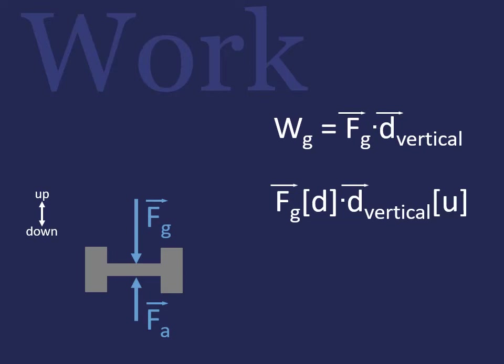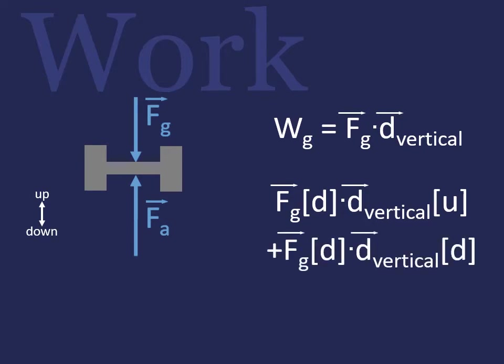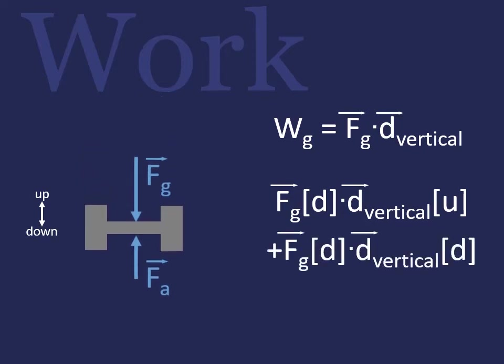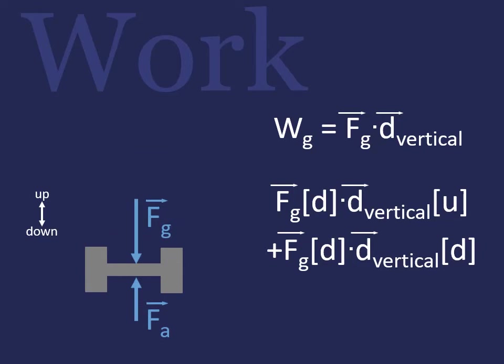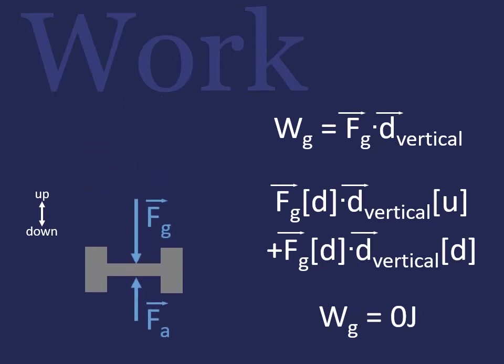Again, the force of gravity is down and the displacement is up — I am doing work against the force of gravity. When I decrease my applied force, the force of gravity is still pushing down, the displacement is down, and I am erasing any work that I had accomplished. So, work going into gravity overall equals zero joules.